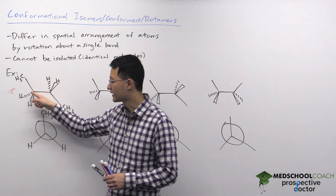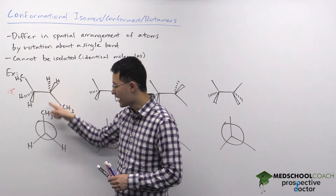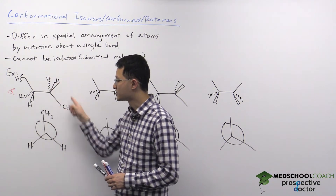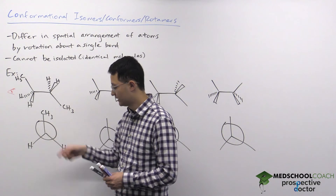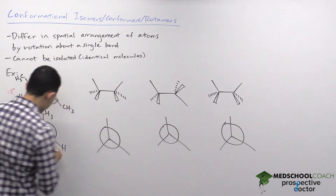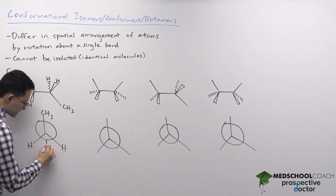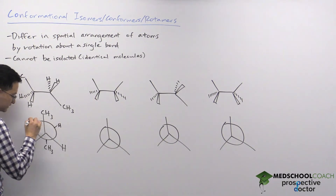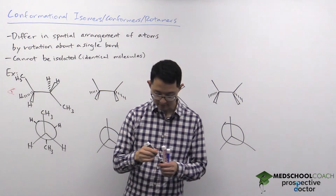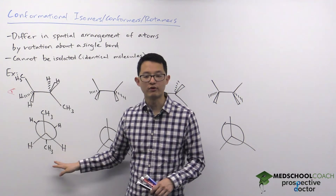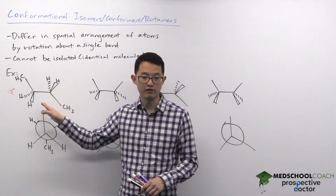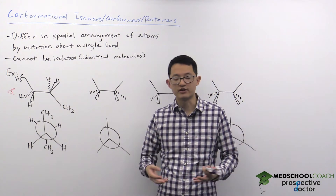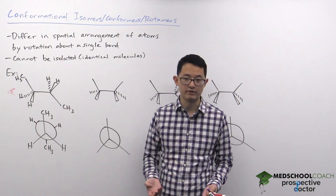We then look at the carbon atom in the back, denoted by the large circle, and identify its substituents. The back carbon has a methyl group facing down and hydrogen groups facing the top left and top right. This is just another way of visualizing the same molecule — we haven't looked at any conformational isomers yet.